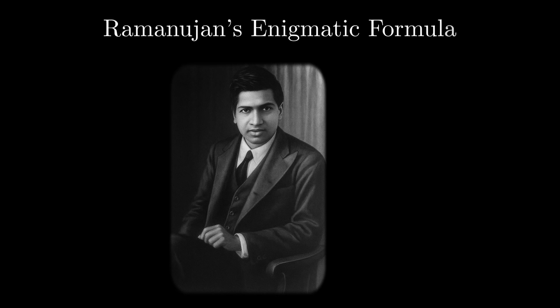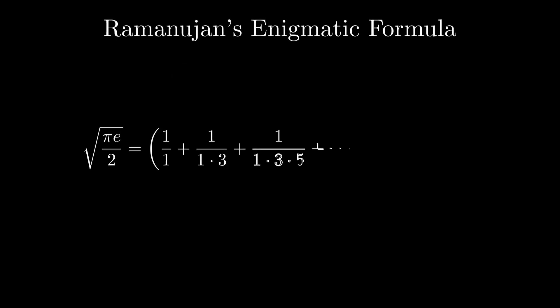We begin with one of the most elegant and mysterious formulas in all of mathematics, Ramanujan's enigmatic formula. On the left side, we see the square root of pi times e divided by 2, and somehow this equals the sum of two entirely different infinite structures, an infinite series and a continued fraction.